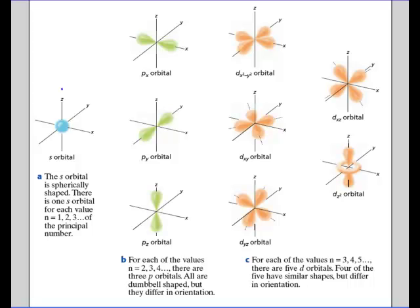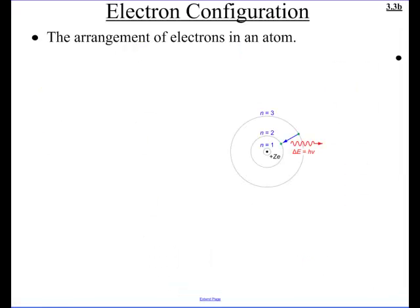There are some basic rules, and you're going to find it's kind of confusing at first, but then after a while it gets pretty straightforward. What we're going to do is known as the electron configuration — that just means the arrangement of the electrons in an atom.